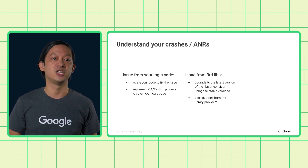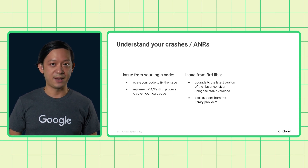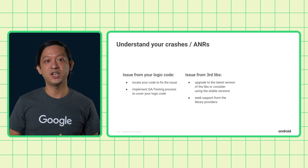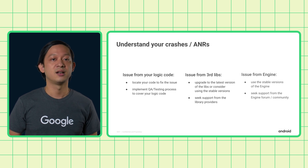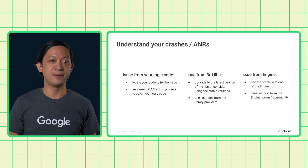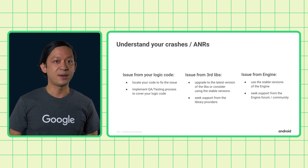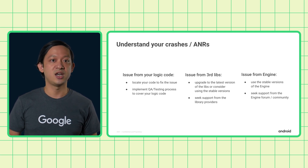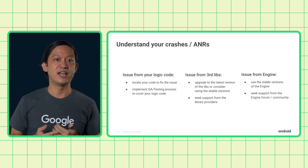Additionally, it's a good idea to check the official forum of the library. Usually, the library developer will share the list of known issues and you may be able to find a workaround for your issues. Lastly, the issues could come from the game engine you are using. Similar to third-party libraries, we would suggest you stay on the latest stable version of the engine, or seek support from the engine forum, community, or their engineers.